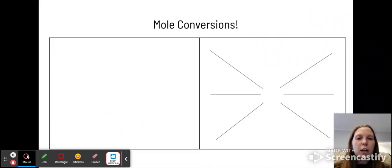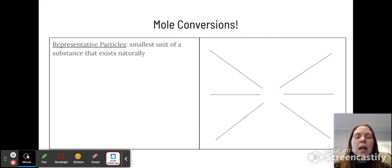So now let's talk very quickly about mole conversions. There are certain terms to know here. So we have representative particles, which are the smallest unit of a substance that exists naturally. For instance, an ionic compound, the smallest is a formula unit.